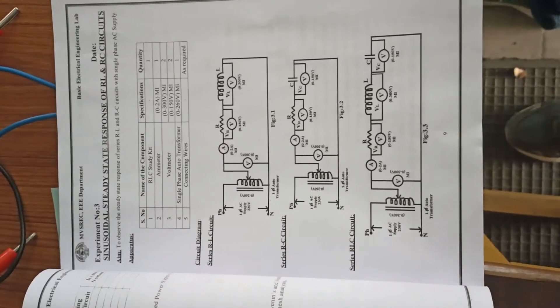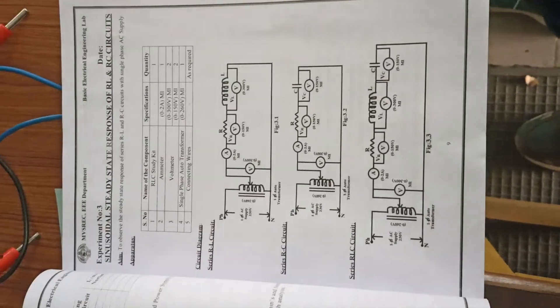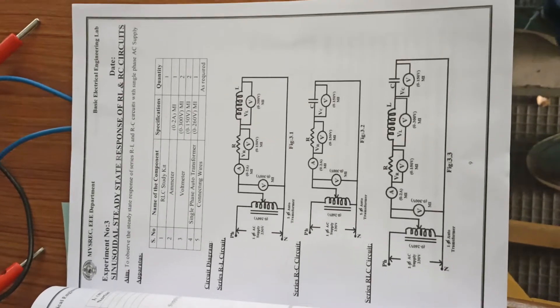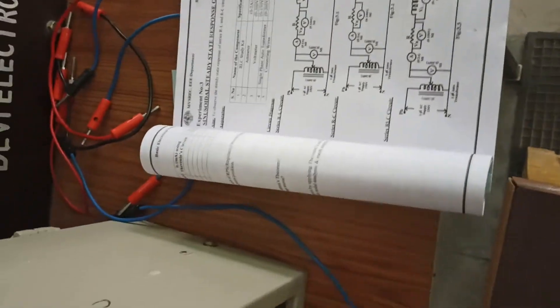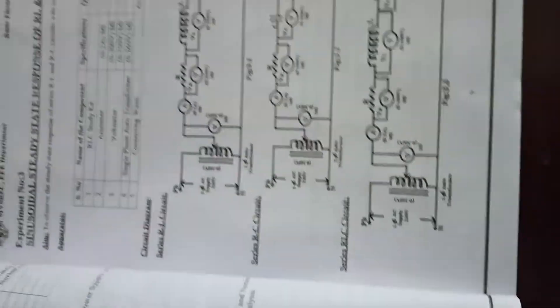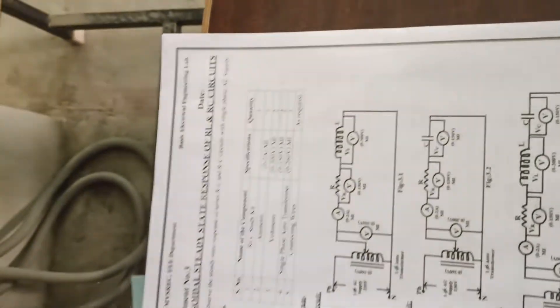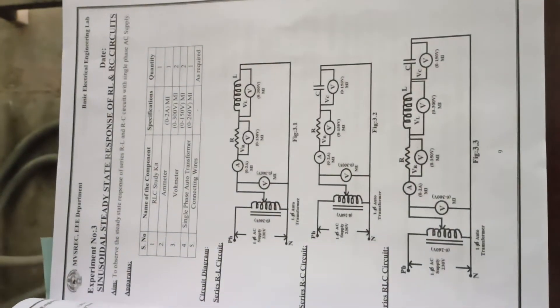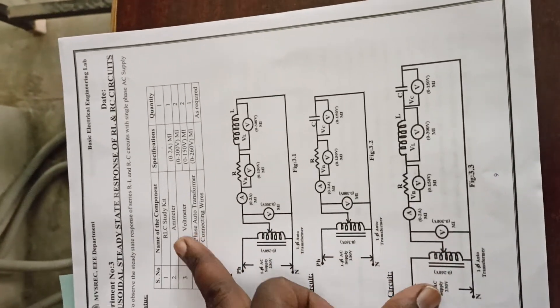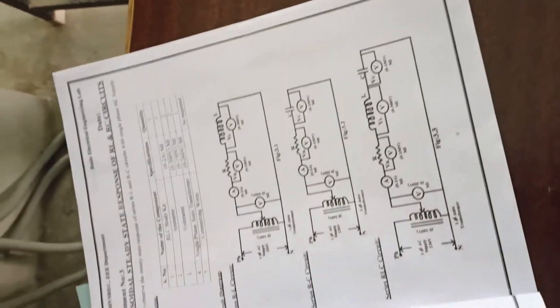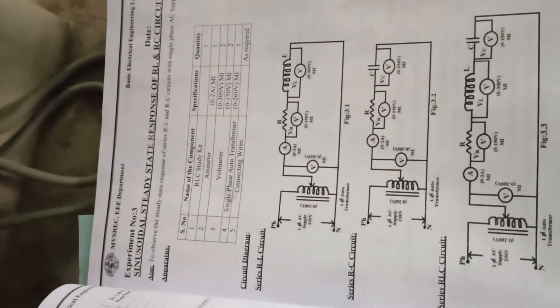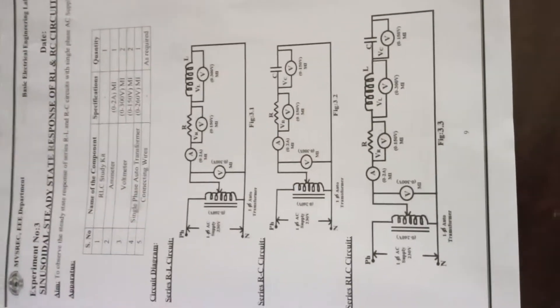Hello everyone, we shall see sinusoidal steady state response of series RL and RC circuit. For this experiment you require an RLC circuit kit, an ammeter, voltmeter, and single phase autotransformer, and connecting wires are required.